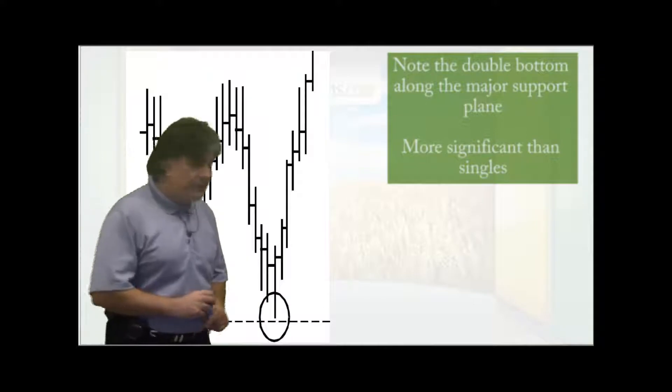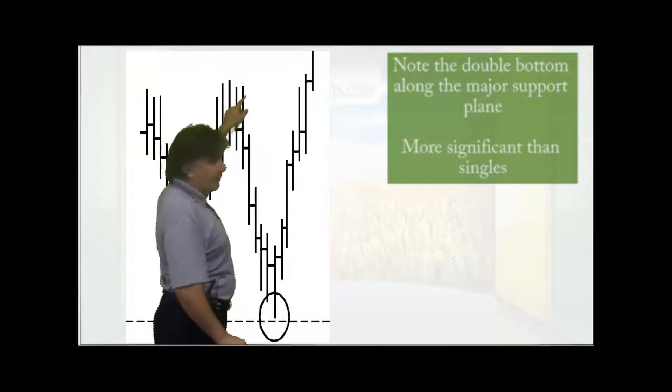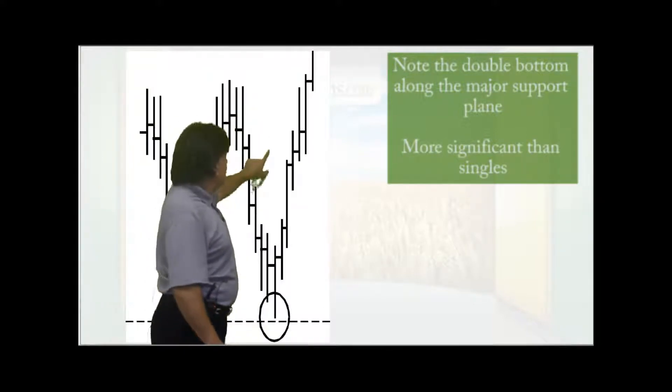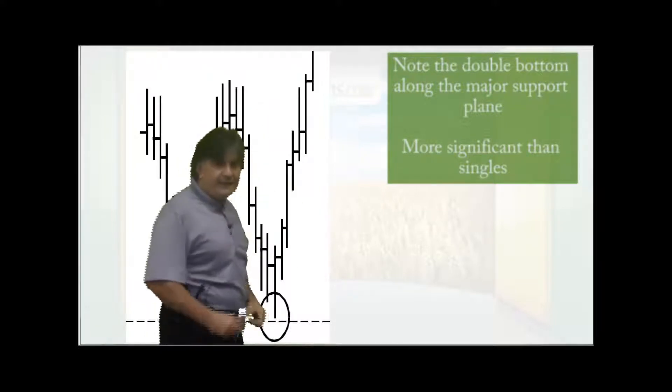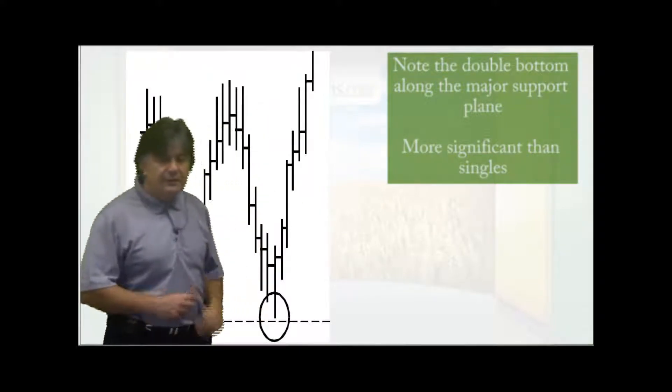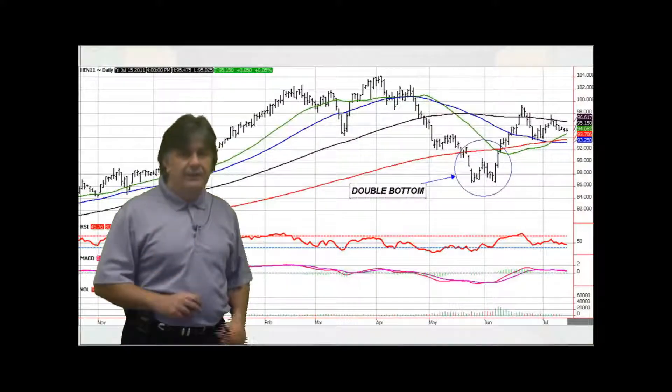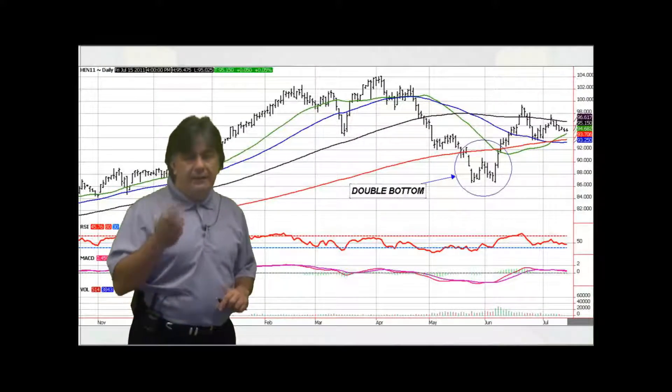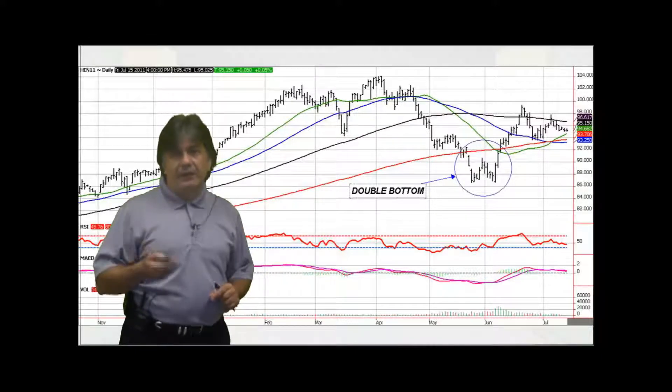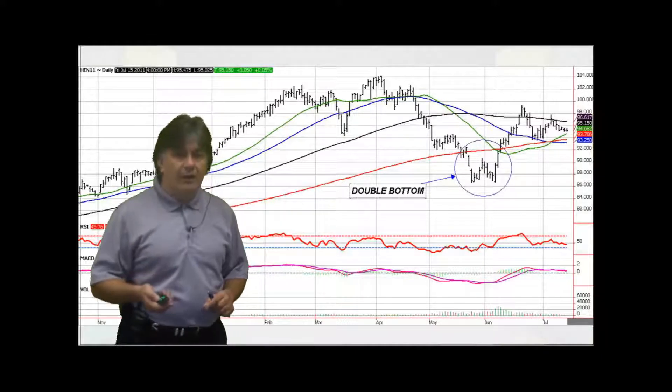There's double bottoms. So in this example here, you can see the market's trending lower. It stops, goes back up, retest that low. You draw resistance or a support plane at the bottom there. More significant than a single. These can actually signal a bottom in markets as well.